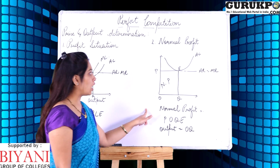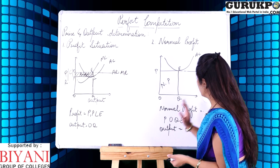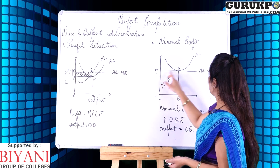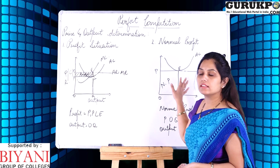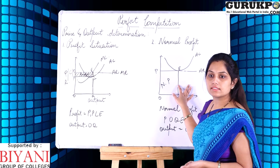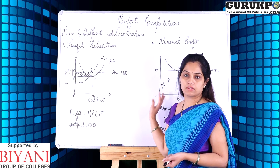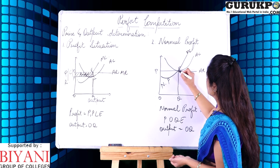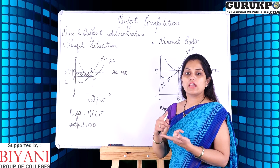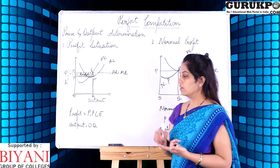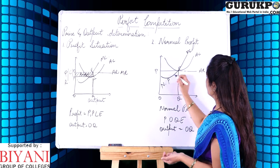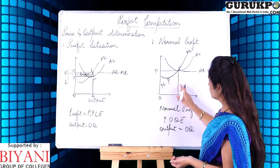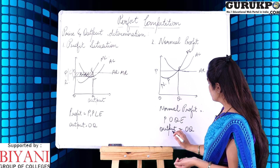In the normal profit situation, the x-axis shows output and the y-axis shows price, cost, and revenue. The AR and MR line is again parallel to the x-axis since prices are identical in perfect competition. The point of equilibrium is where MR equals MC, and MC should cut MR from below. The equilibrium line drawn to the AC curve shows that in normal profit the AC is tangent to AR at that point, and the normal profit box is POQE with output OQ.